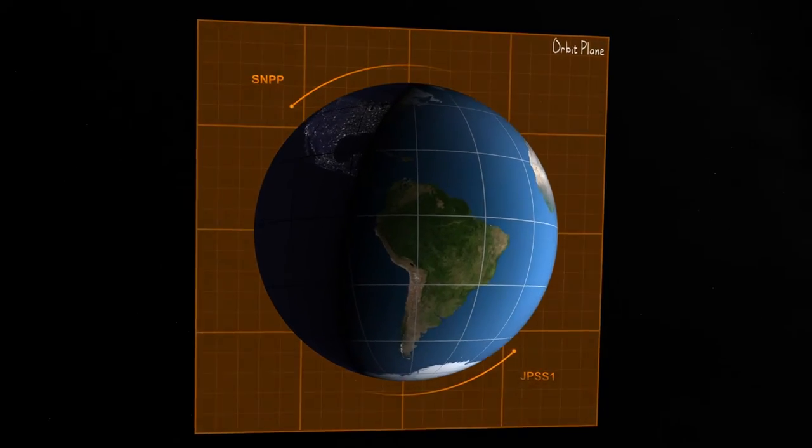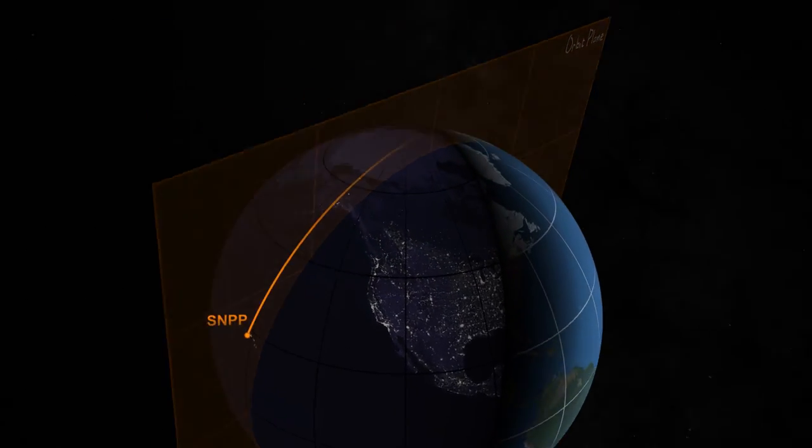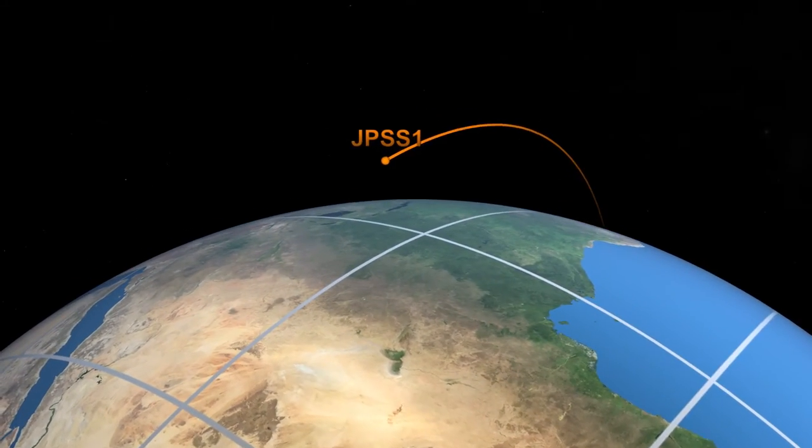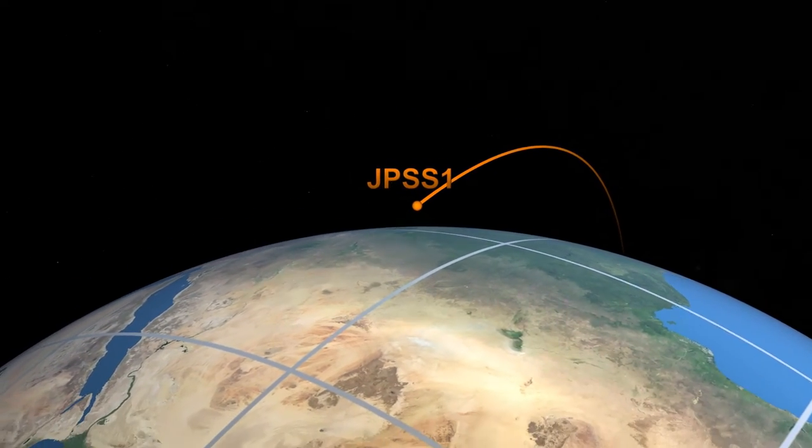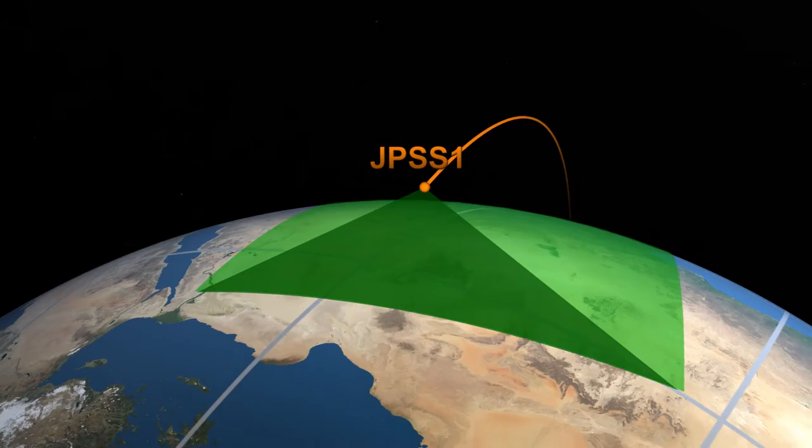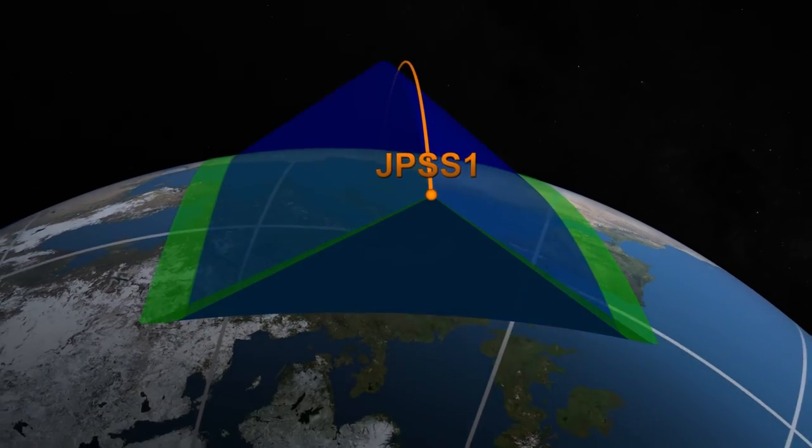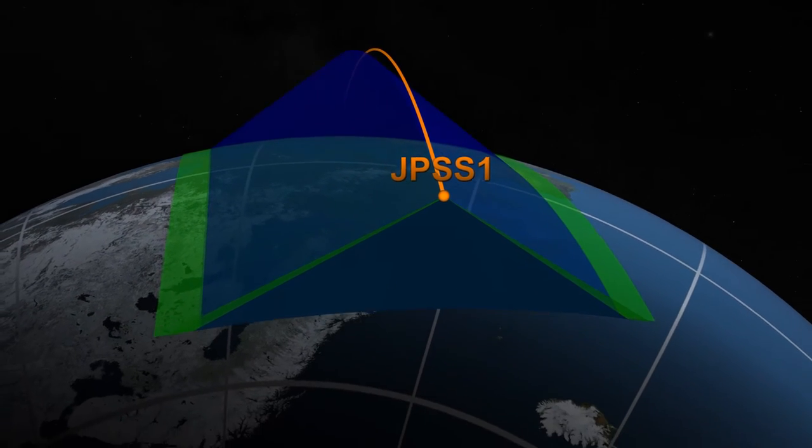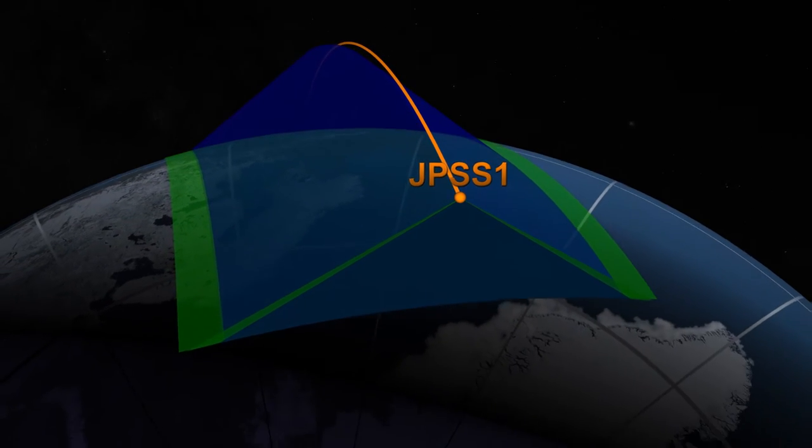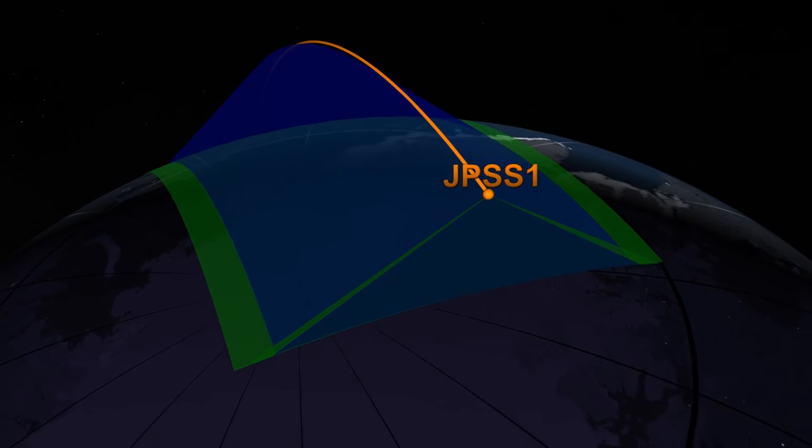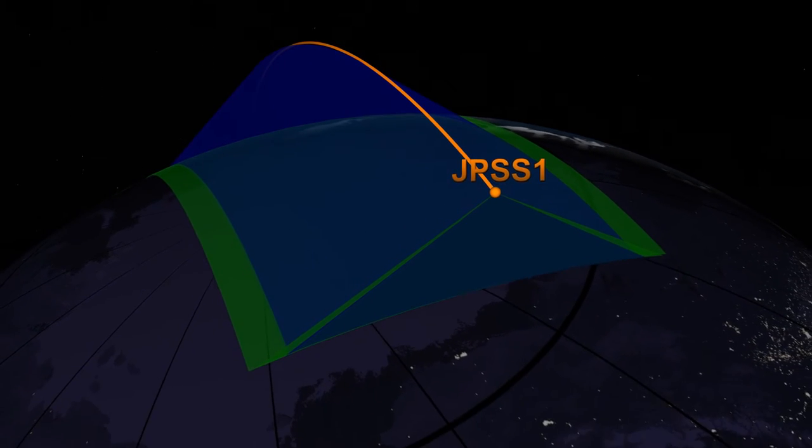Now let's look at how the satellites observe the Earth. JPSS satellites have multiple instruments on board to observe the Earth's environment and atmosphere. An imager collects data about the Earth's surface, depicted in green, and sounders that collect data on the atmosphere beneath the satellite are depicted in the blue triangular region. The trailing colors behind the satellite represent the data swath, or region where the data has been collected.